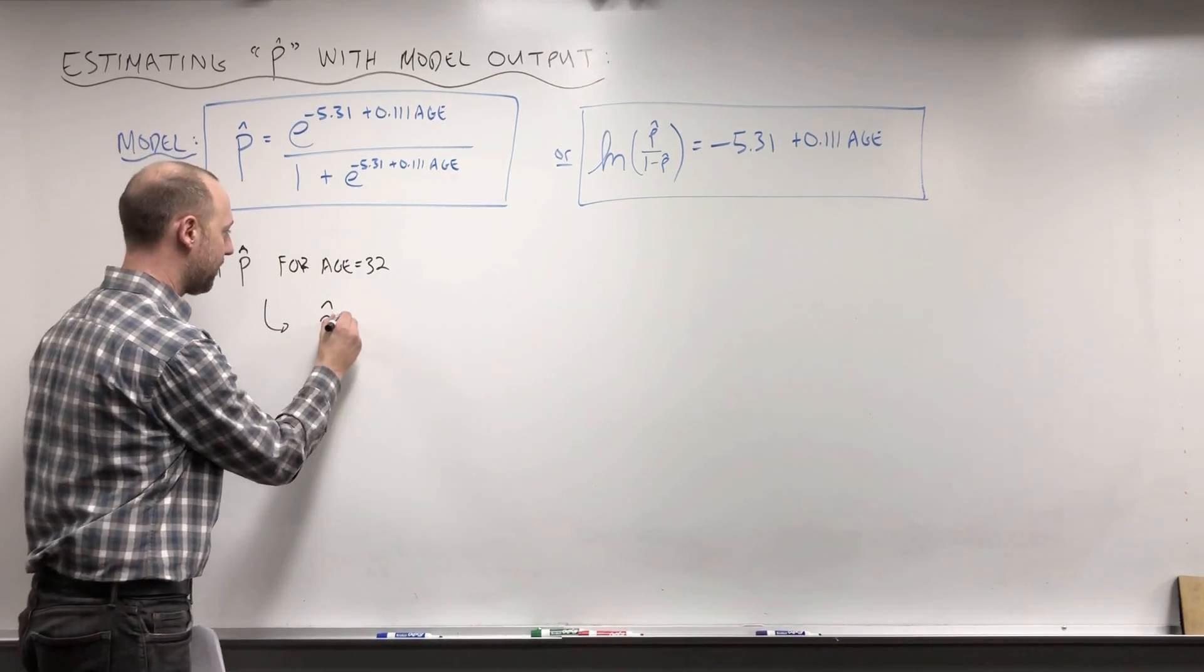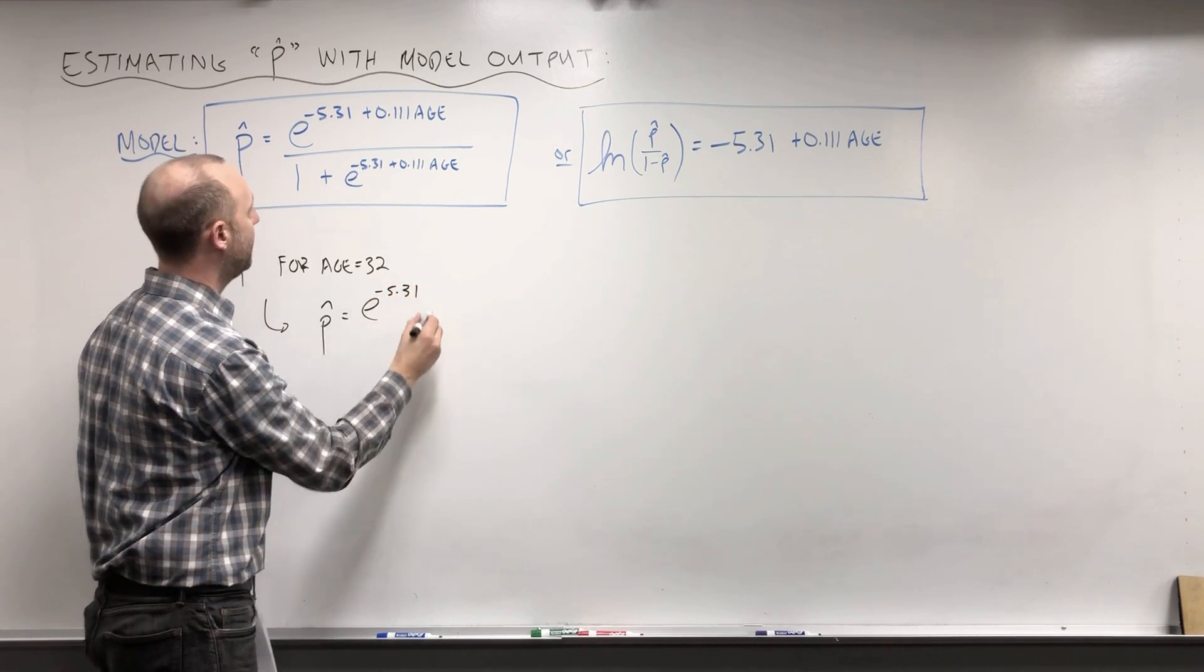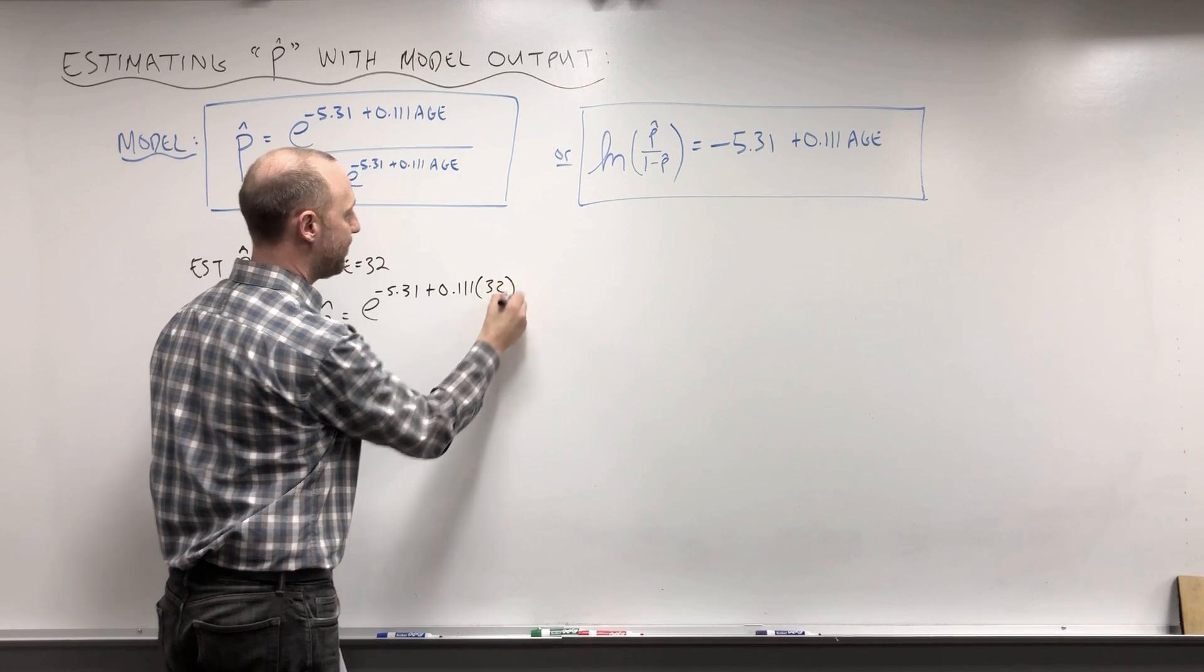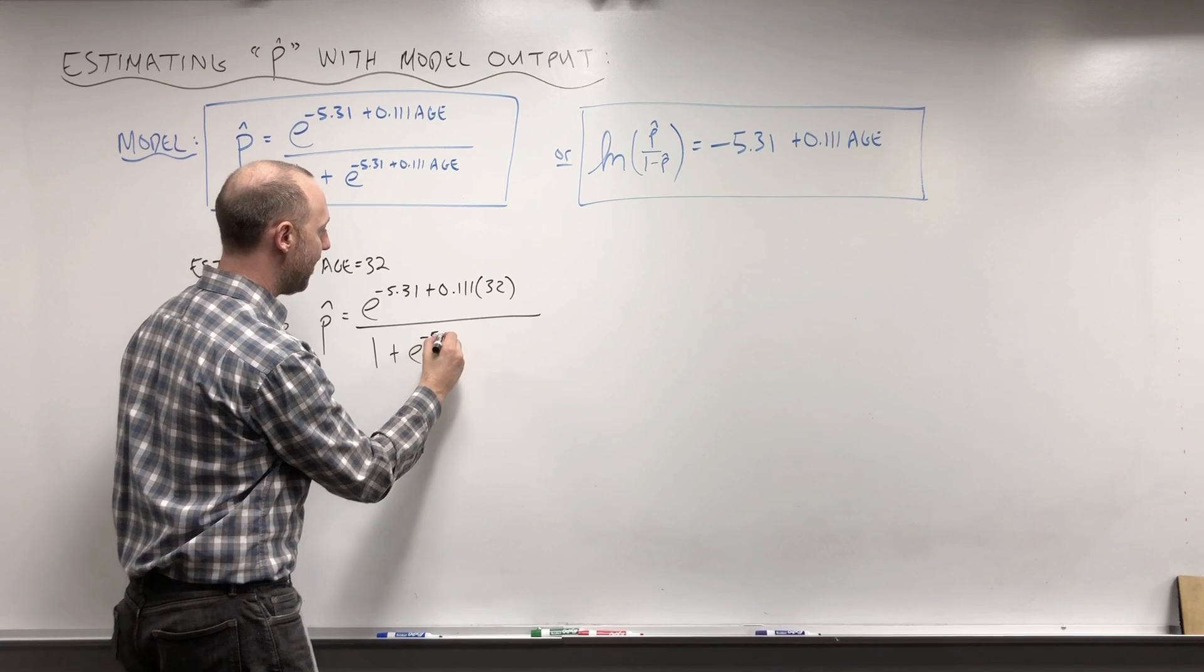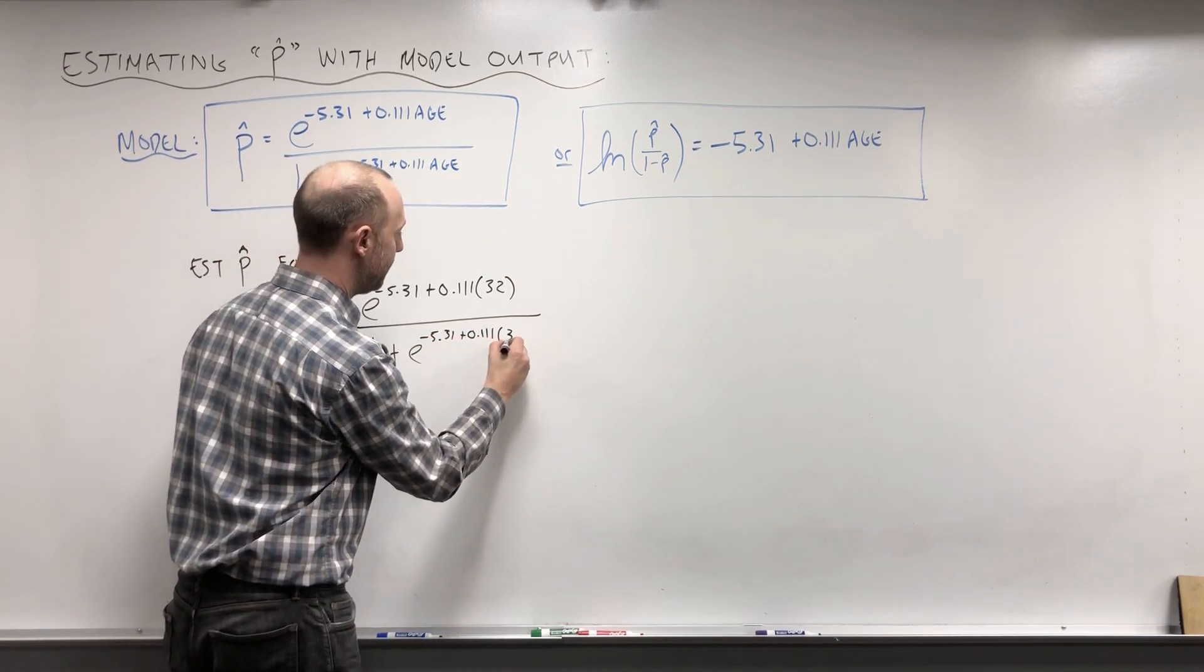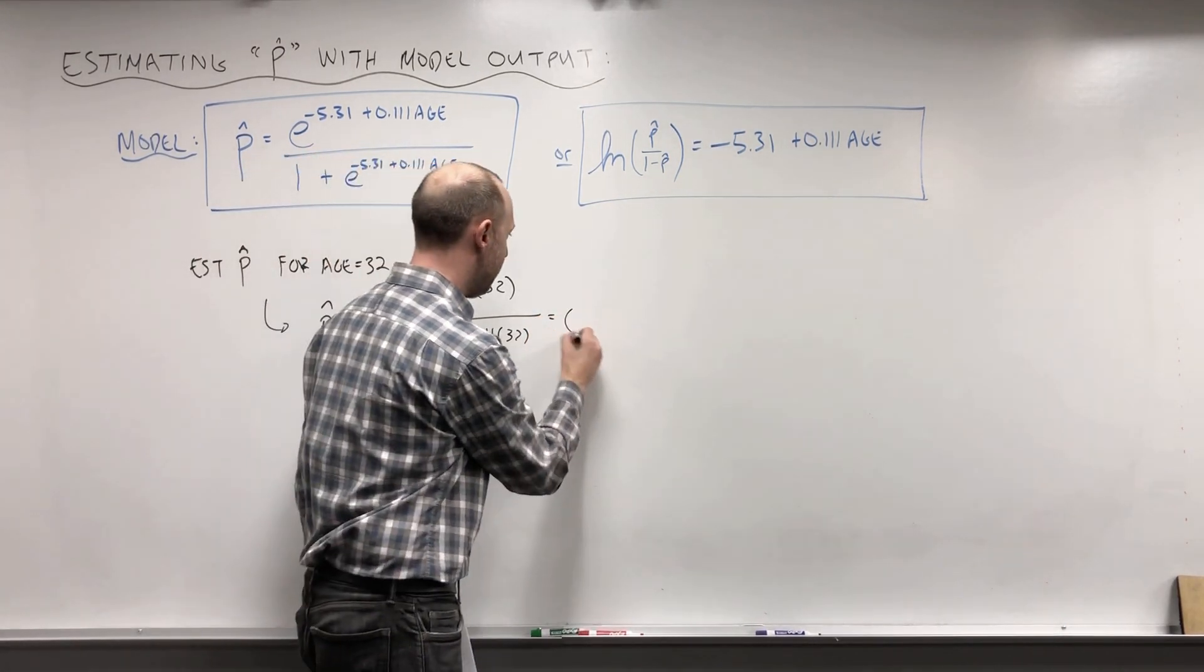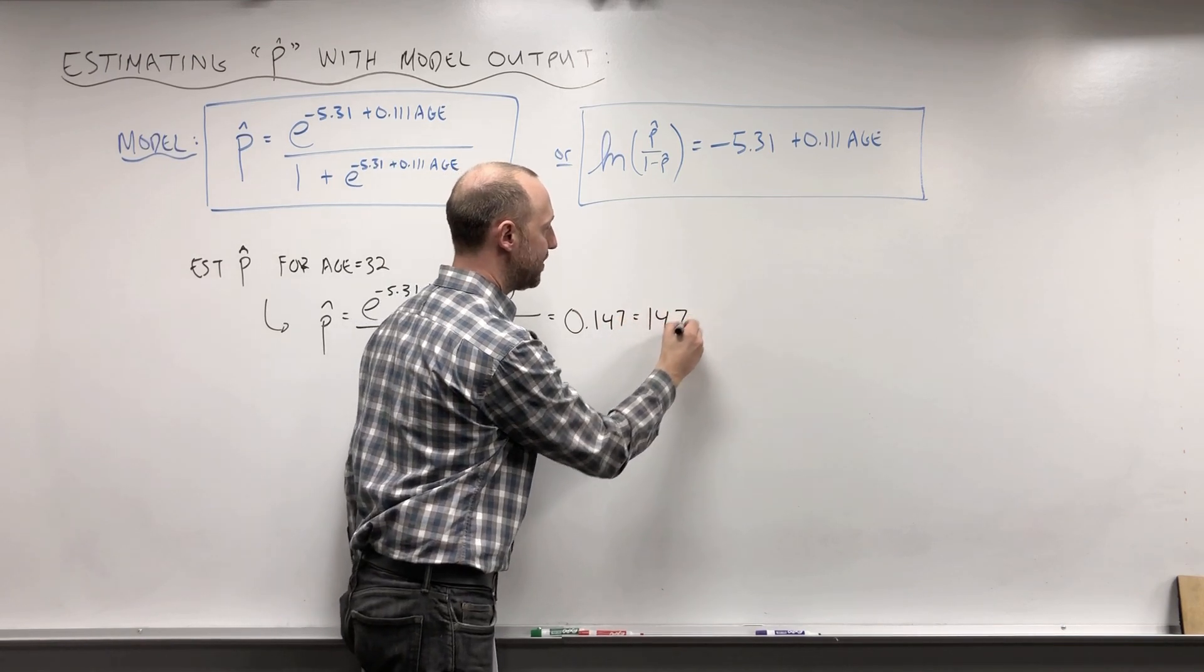To estimate the probability for age 32, it's e^(-5.31 + 0.111×32) over 1 + e^(-5.31 + 0.111×32). If we work that out, it comes out to 0.147 or 14.7%.